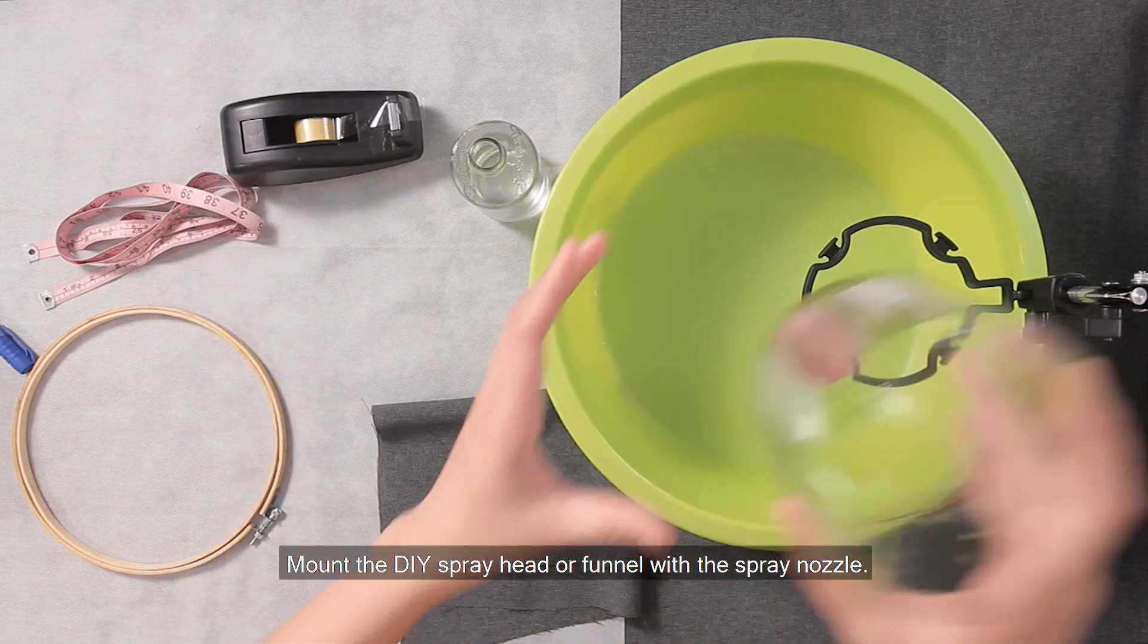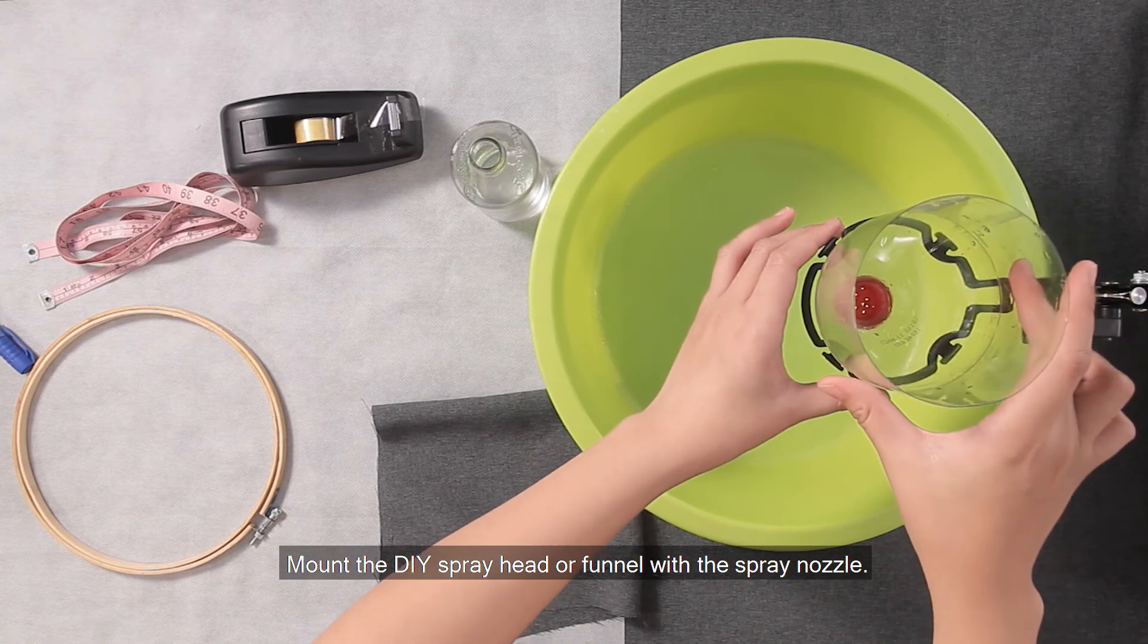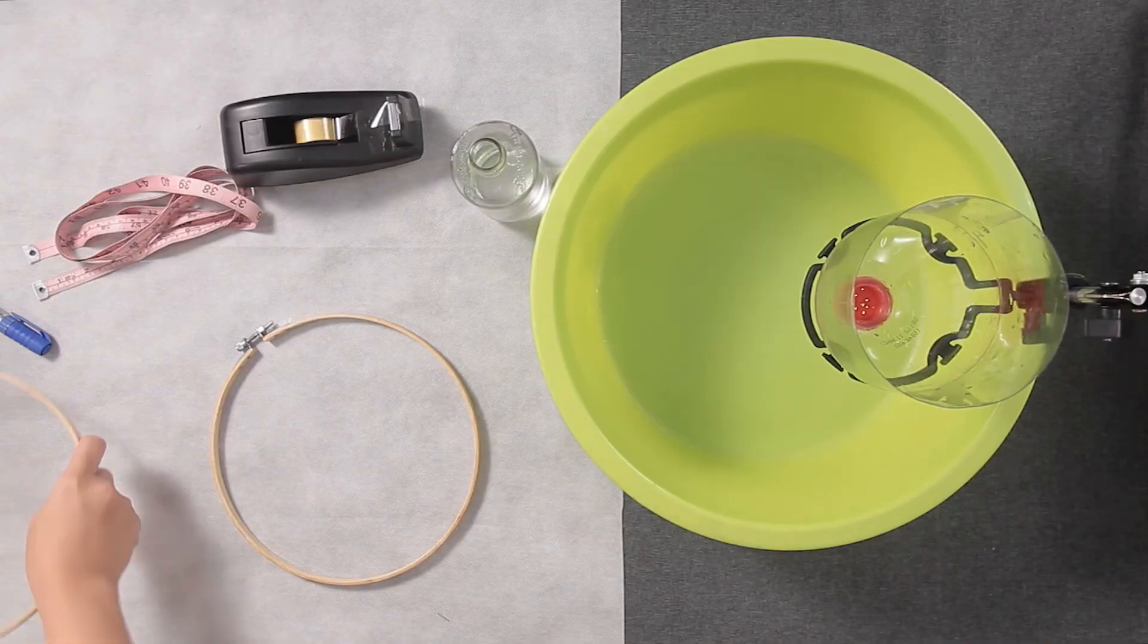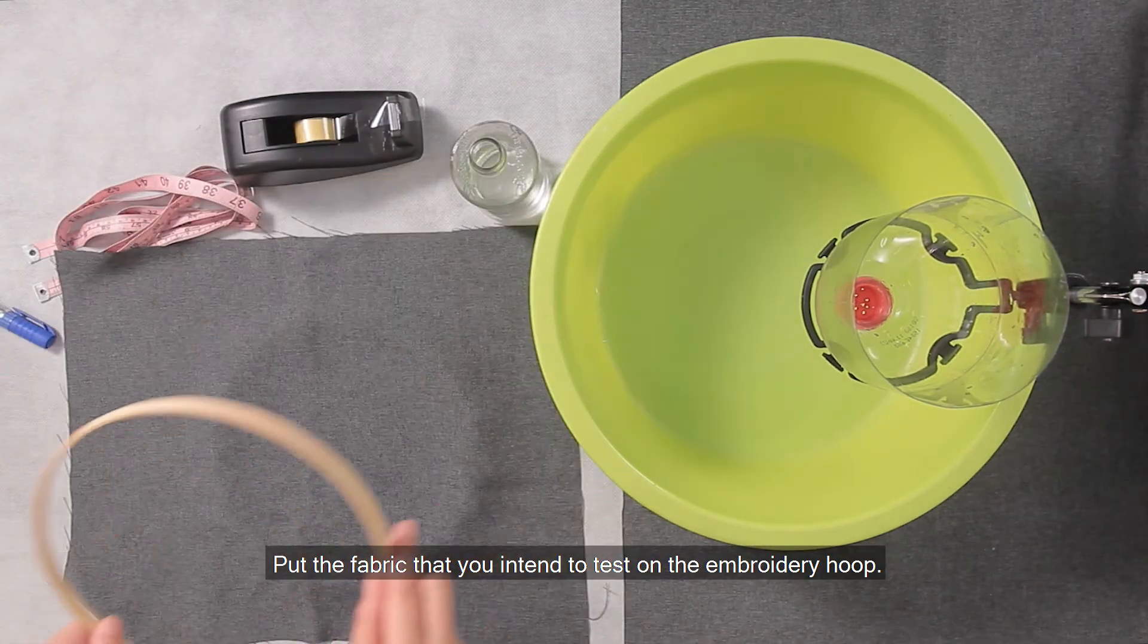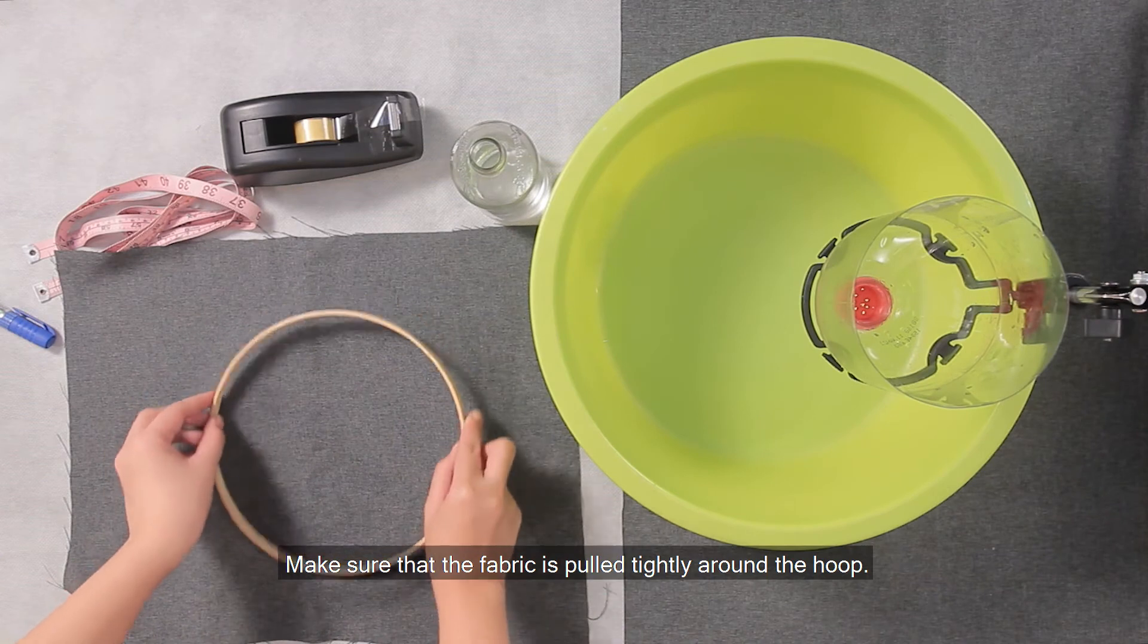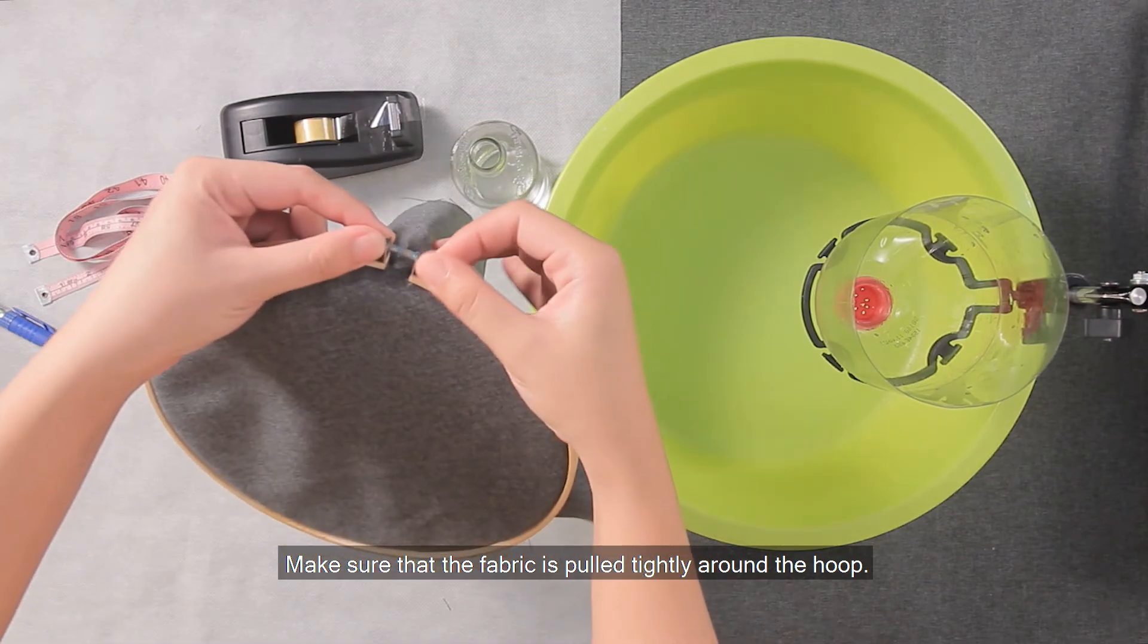Mount the DIY spray head or funnel with the spray nozzle. Put the fabric that you intend to test on the embroidery hoop. Make sure that the fabric is pulled tightly around the hoop.